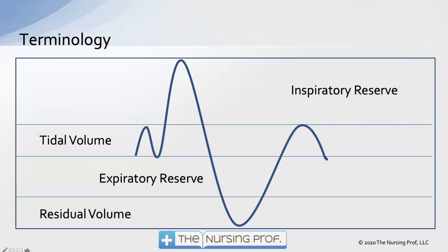The tidal volume is the volume of air you're breathing in and out as you sit and breathe at rest. If you were going to run a marathon, you'd need more air movement for more gas exchange — to get rid of more CO2 and bring in more oxygen. So we have both an inspiratory and expiratory reserve for those purposes, allowing you to breathe more deeply and have the big breaths necessary to exercise.